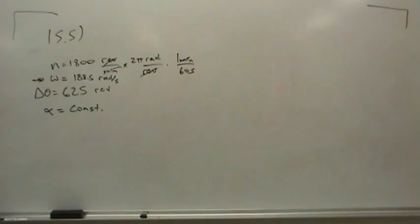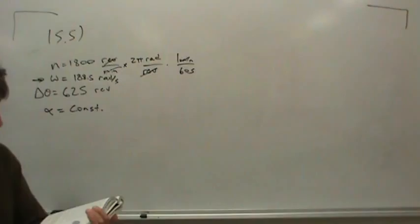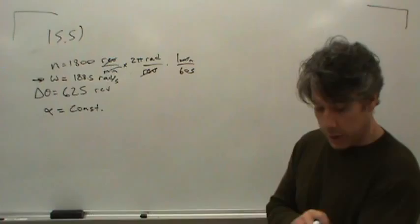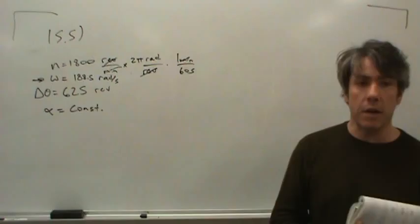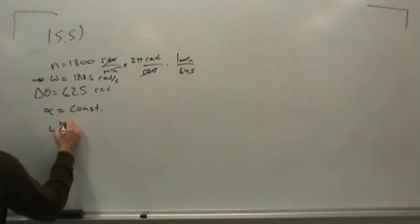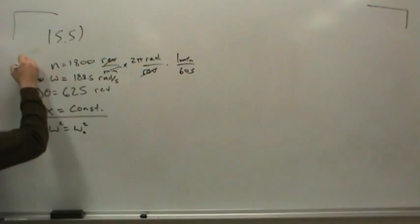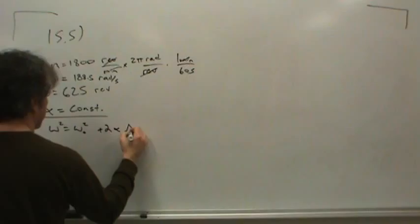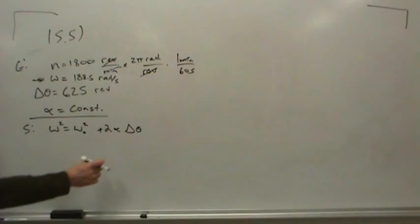All right. So we have the speed. We have the change in position. Now we're supposed to find alpha, the acceleration. Well, are there any equations on page 661 that involve a change in position of delta theta, and omega, and what we're looking for, the alpha? Sure. It's equation 15.9. See that at the bottom of page 661? Now the equation looks like this. It says omega squared equals omega naught squared. I guess this is sort of the solution part, whereas this is the given part.